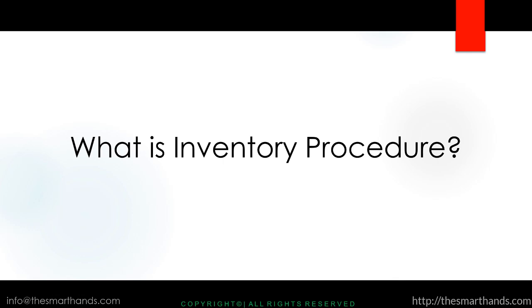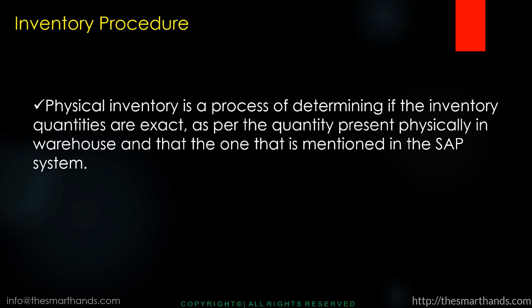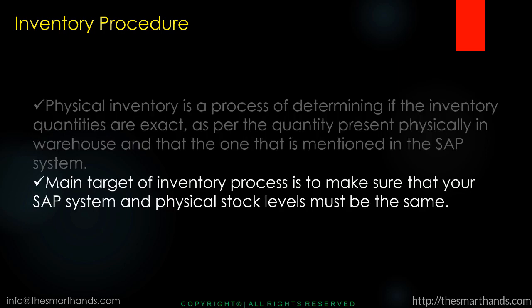First, we'll learn about what is inventory procedure. Physical inventory is a process of determining if the inventory quantities are exact as per the quantity present physically in the warehouse versus what is mentioned in the SAP system. The main target of the inventory process is to make sure that your SAP system and physical stock levels match — whatever stock we have in real time in the warehouse should match the numbers in the SAP system.